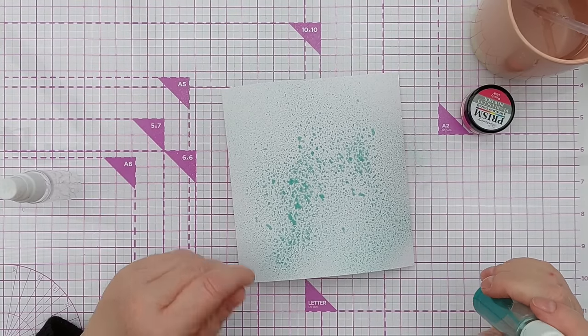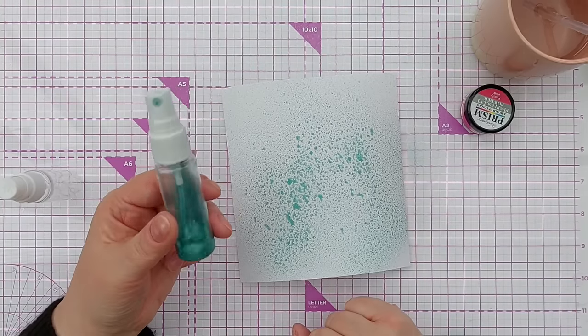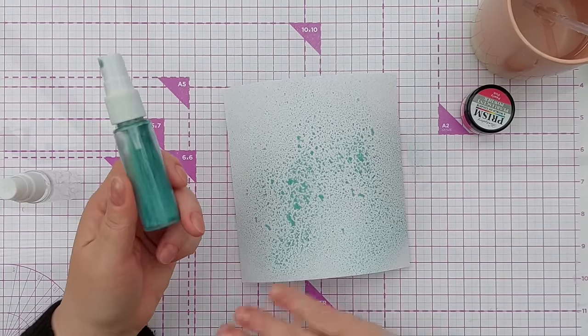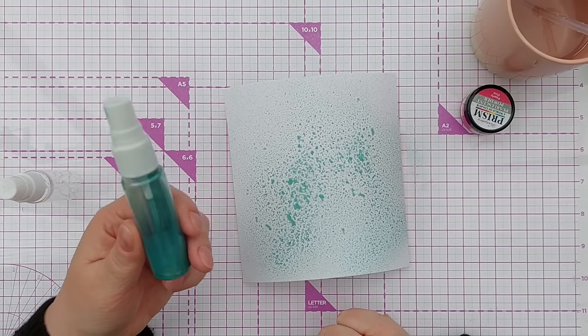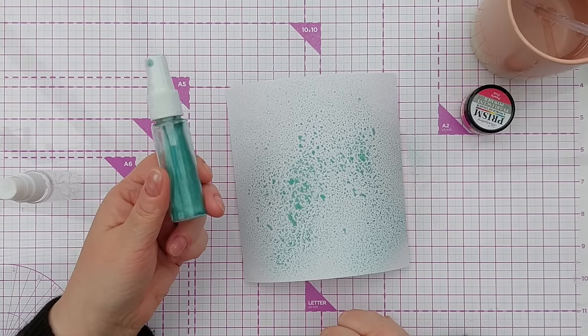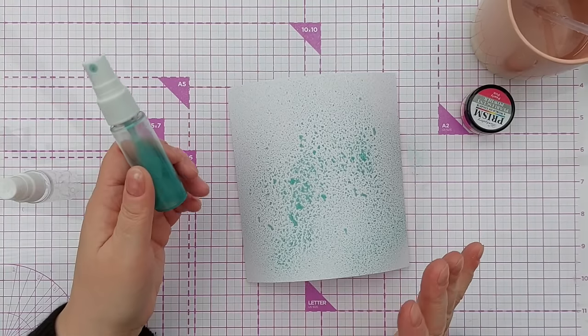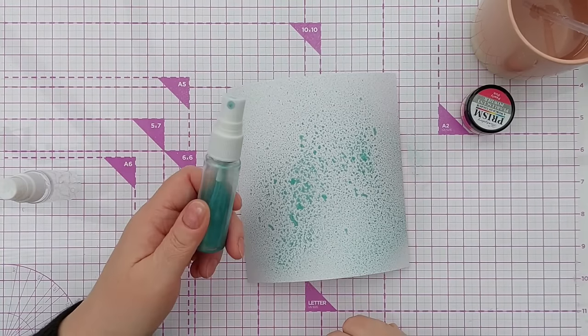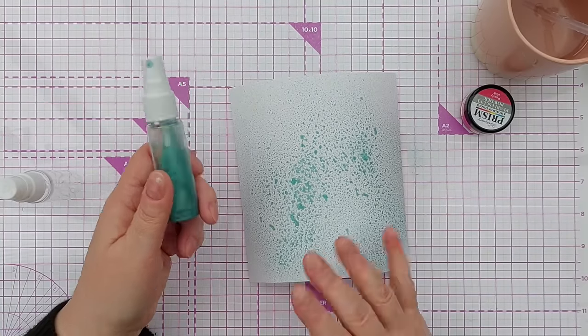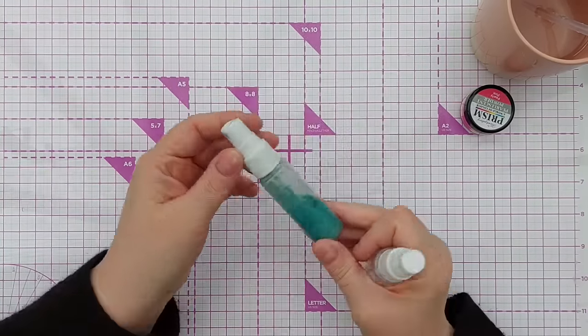If you make your own homemade shimmer sprays and find that the pigment or mica brush off once dry, that's because there's no binder. What you'll need to do is spray your finished project with something like hairspray or a transparent fixative from a craft or art shop, and that should keep everything where it should be.